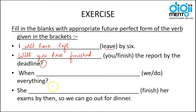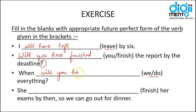'When you do everything?' — again a question: when will you have done everything? The third form of 'do' is 'done', so the answer is: 'When will you have done everything?'